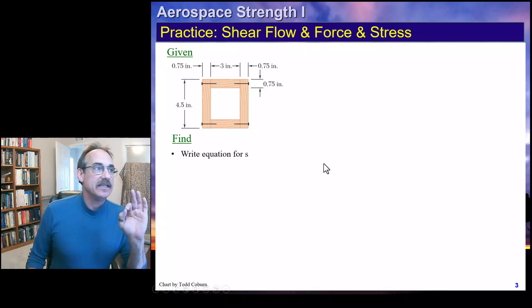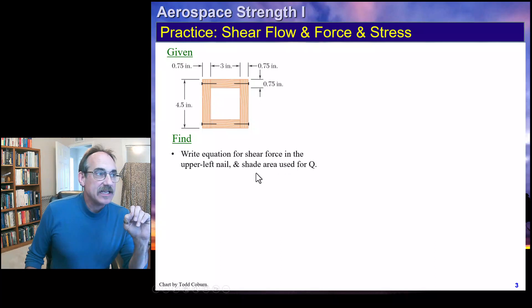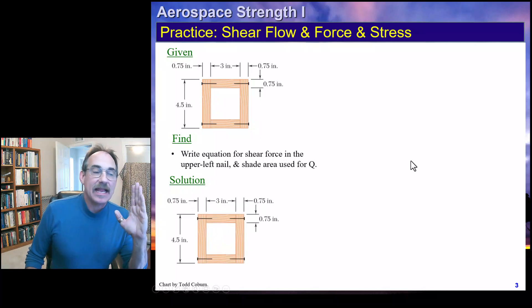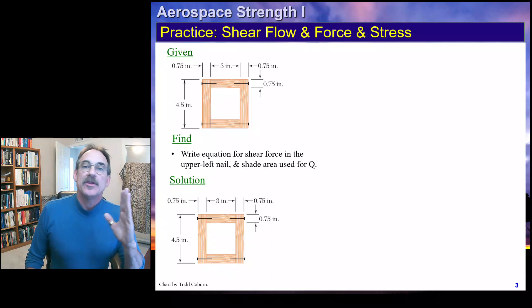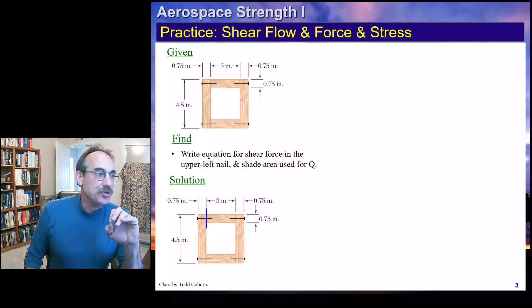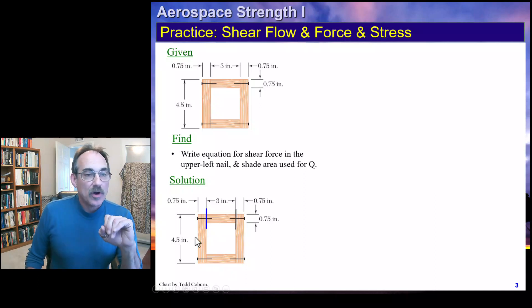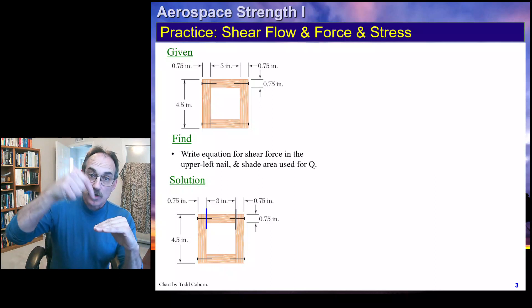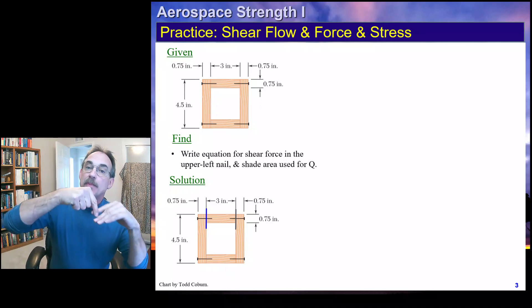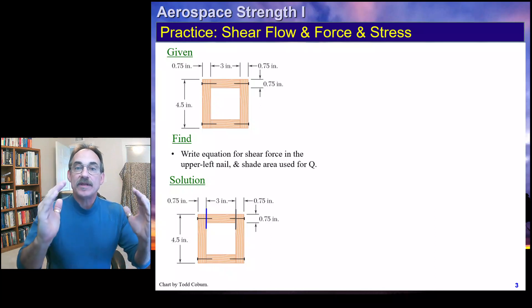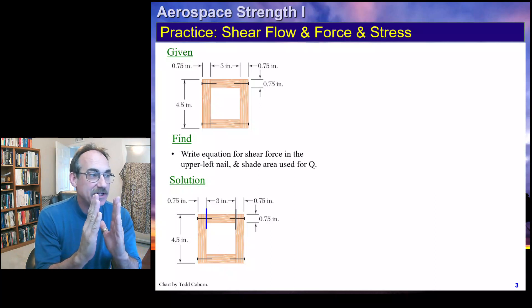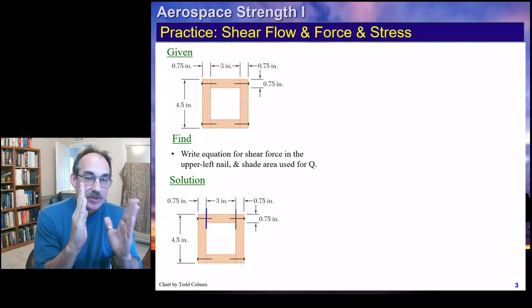Here's another example. If we have a section like this and want to know the shear force in the upper left nail, we first draw a line separating that region. Recognizing symmetry, the easiest approach is to draw a line cutting off not only the nail we want but also the corresponding other nail. With a downward shear force, the centroid is at the center of the section, and we cut off everything away from the centroid, taking advantage of symmetry by cutting through both nails.